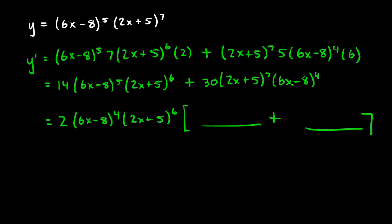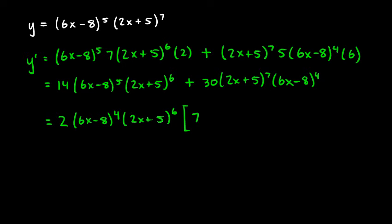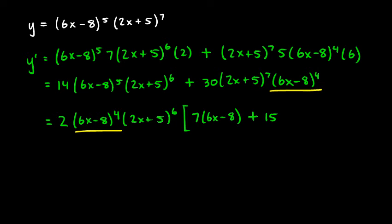Factoring out 2, (6x minus 8) to the fourth, and (2x plus 5) to the sixth, we look at what's left. In the first term, after factoring out the 2, we have 7; after factoring out (6x minus 8) to the fourth, we're left with (6x minus 8); and after factoring out (2x plus 5) to the sixth, nothing remains. In the second term, after the 2 we have 15, and after (2x plus 5) to the sixth we're left with (2x plus 5).